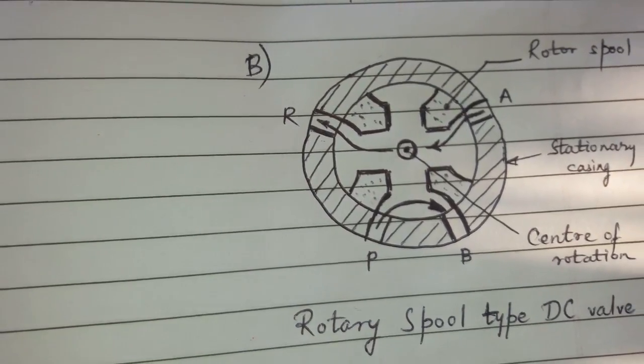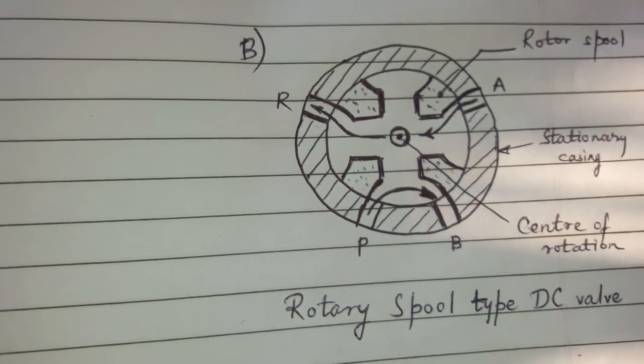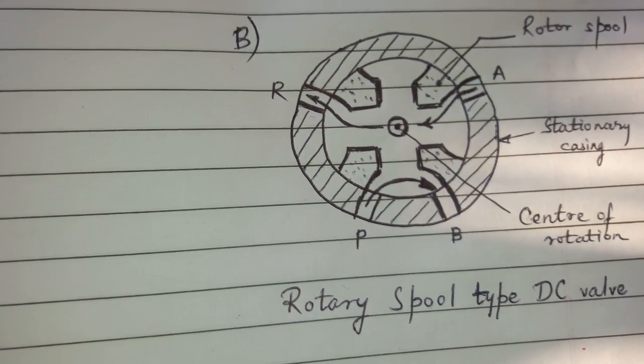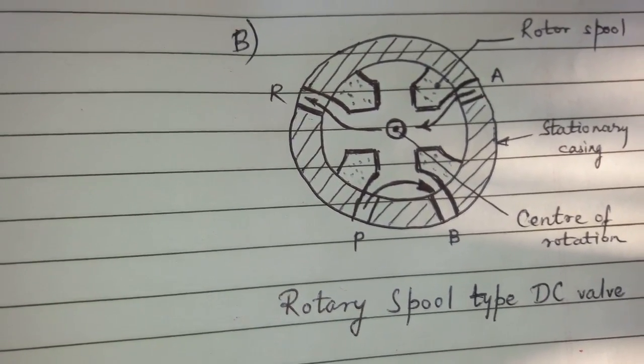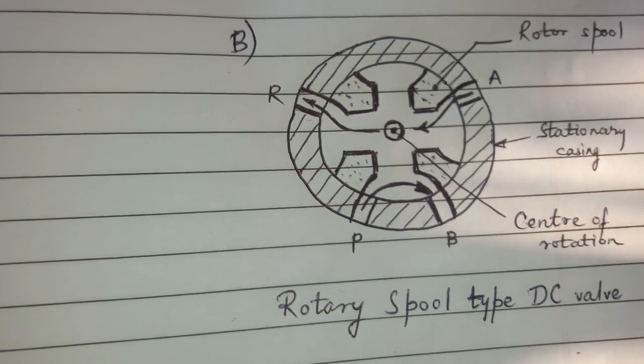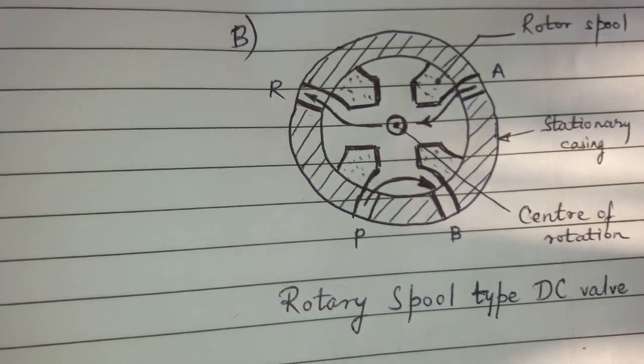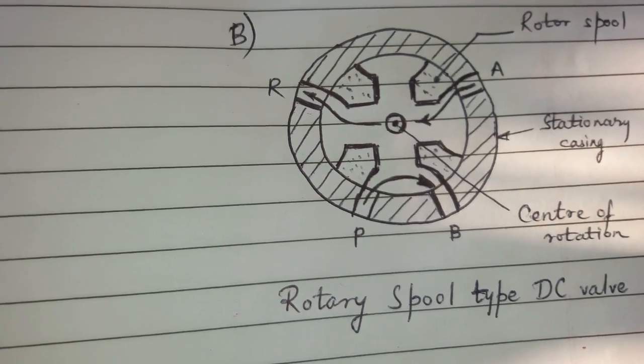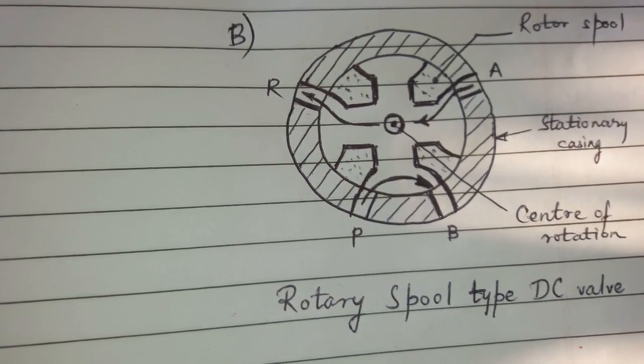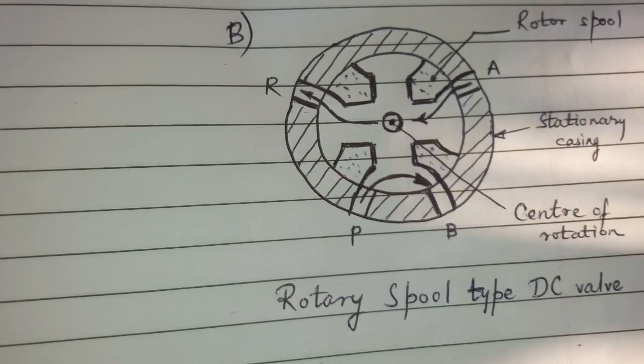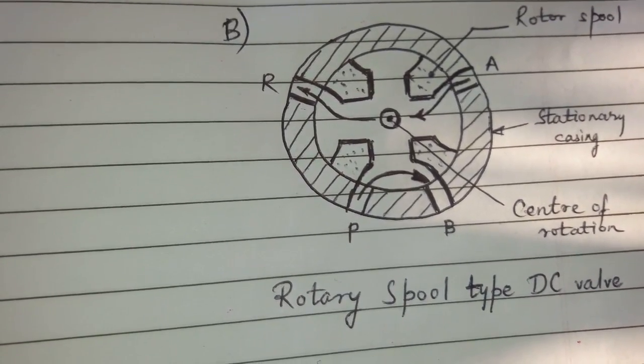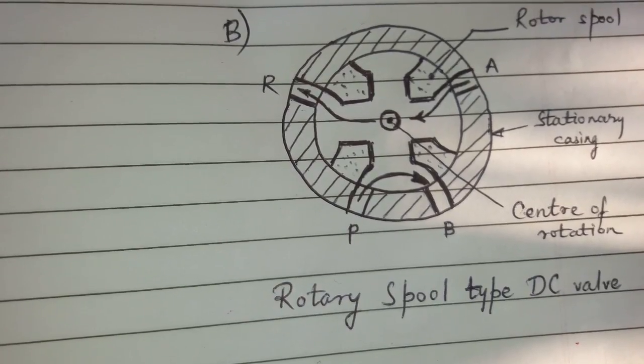The disadvantages of rotary spool type DC valve. Due to rotary motion of spool leakage inside the valve is possible. These valves are not suitable for high pressure because sometimes due to pressure of oil it rotates the valve in unwanted direction. And rotary spool valves are generally manually operated.